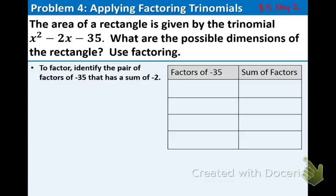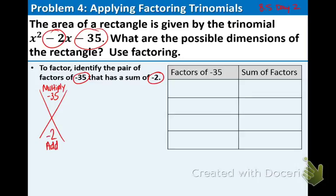We want to find the pair of factors of negative 35 that have a sum of negative 2. So first thing I want to do is write the X and take the negative 35, put it up top. We want to multiply two numbers to get negative 35 and take the negative 2 and put it on the bottom. And we're going to add two numbers to get negative 2. So let's use the box set to organize our information and let's talk about the factors of negative 35.